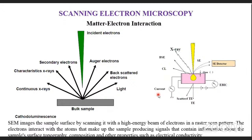We get many secondary outputs: secondary electrons, Auger electrons, backscatter electrons, light, continuous X-rays, characteristic X-rays, etc. Some electrons will transmit if your sample is really thin. In TEM, we look for transmitted electrons. But in SEM, we basically look for secondary electrons and backscatter electrons. For basic imaging we use secondary electrons, and for specialized imaging we use backscatter electrons.